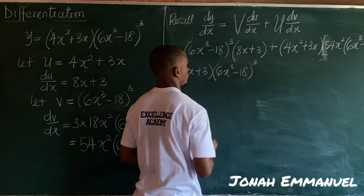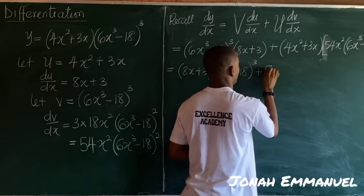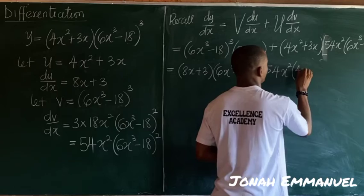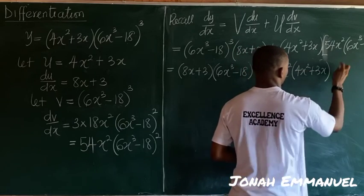Next up plus, I'll take this first, I'm having 54x squared into this 4x squared plus 3x, then finally into this, I'm having 6x cubed minus 18 all squared.